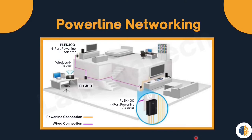Using the same wiring that delivers electricity, power line networking sends information by sending data on certain frequencies. Power line networking is especially useful when wireless access points cannot reach all the devices in the home. Remember, power line networking is not a substitute for dedicated cabling in data networks; however, it is an alternative when data network cables or wireless communications are not possible or not effective.